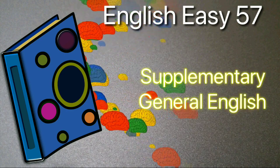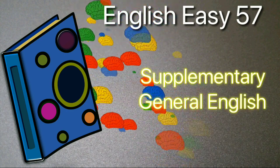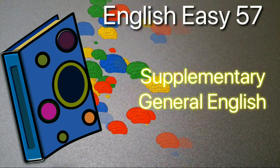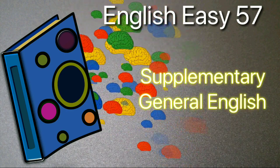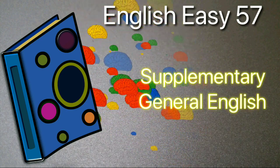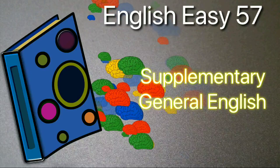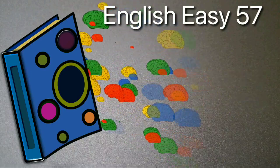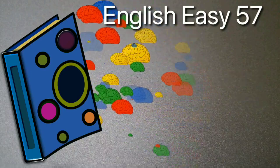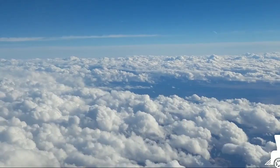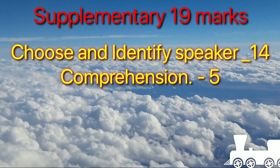If you can read English paper 2, it covers supplement reading and general English. This is the portion. You don't have to learn many things — you don't have to learn general knowledge and general English separately.